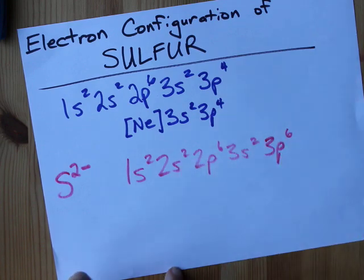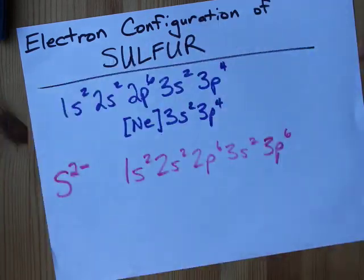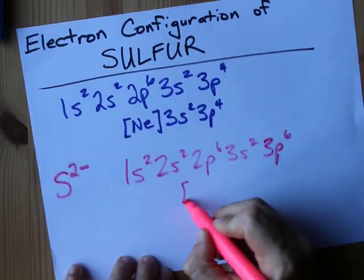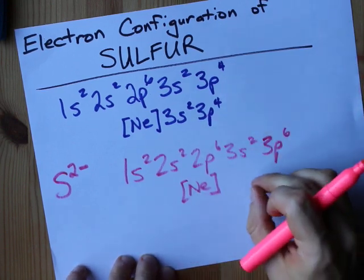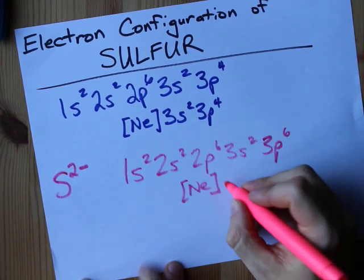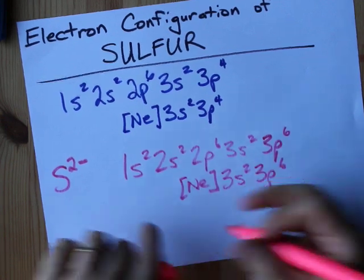Oh, that's actually isoelectronic with argon, but you might not have to know that. Shorthand, you go back to the previous noble gas. Notice I said previous. You can't just put argon in square brackets. You've got to list out that 3S2, 3P6. This is it.